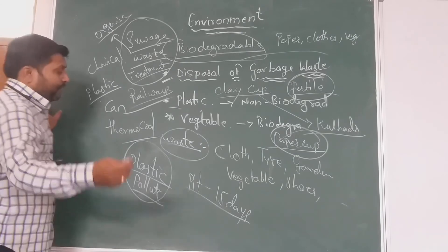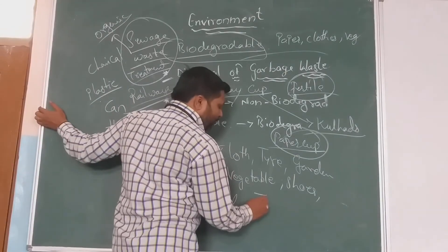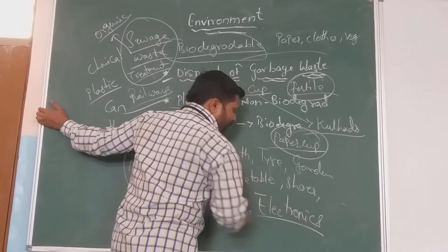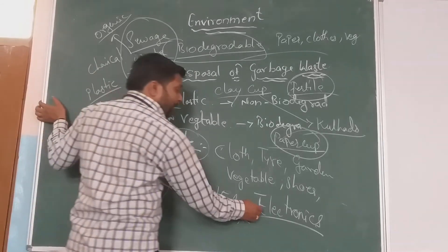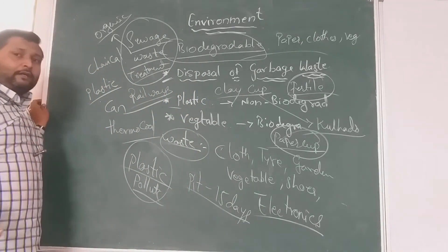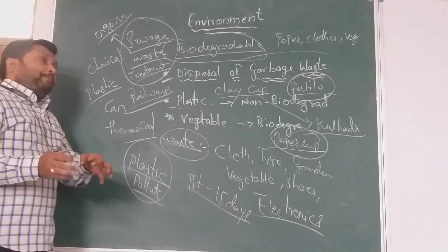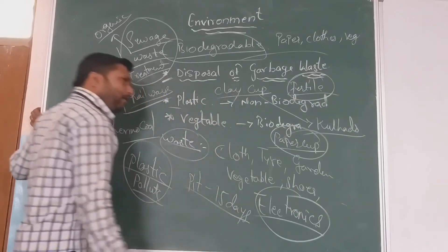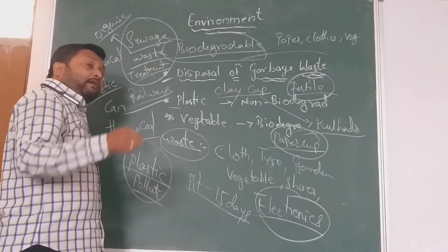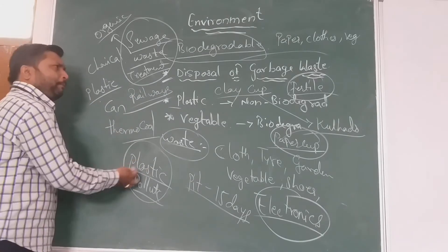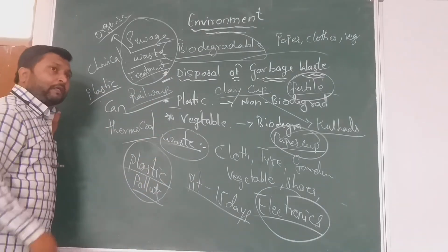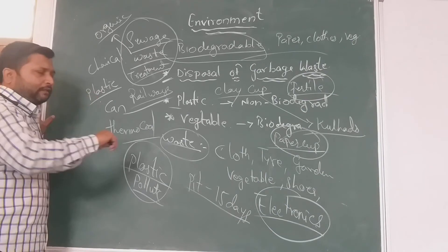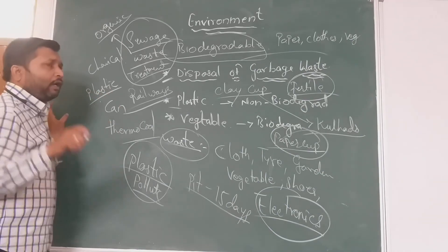Lastly, today people are using more and more electronic devices. Does your area or city have proper disposal of electronic waste? If they dispose of it, how do they dispose? Regarding that, you have to collect information from the internet or the library. Not only that, the recycling method — we know that we are recycling plastic, glass, and paper. How is the recycling done? Go and visit any recycling unit and collect information regarding recycling plants.